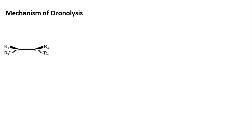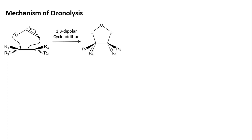After having a basic introduction to the ozone molecule and the overall reaction of ozonolysis, we can now start studying the mechanism. Let's start with an alkene and the ozone molecule. The negative charge of the ozone molecule will attack a carbon of the alkene, and in response the double bond of the alkene will attack the other terminal oxygen of the ozone. The double bond between two oxygen atoms will be shifted to the central positively charged oxygen. This reaction is known as 1,3-dipolar cycloaddition, and it will yield a five-membered ring which is highly unstable, known as molozonide.